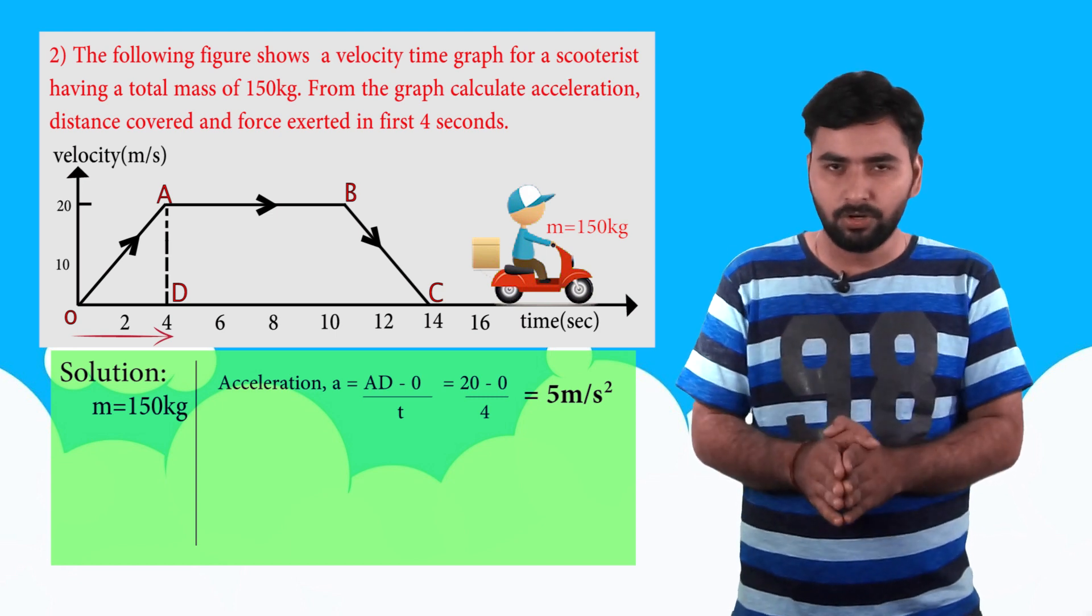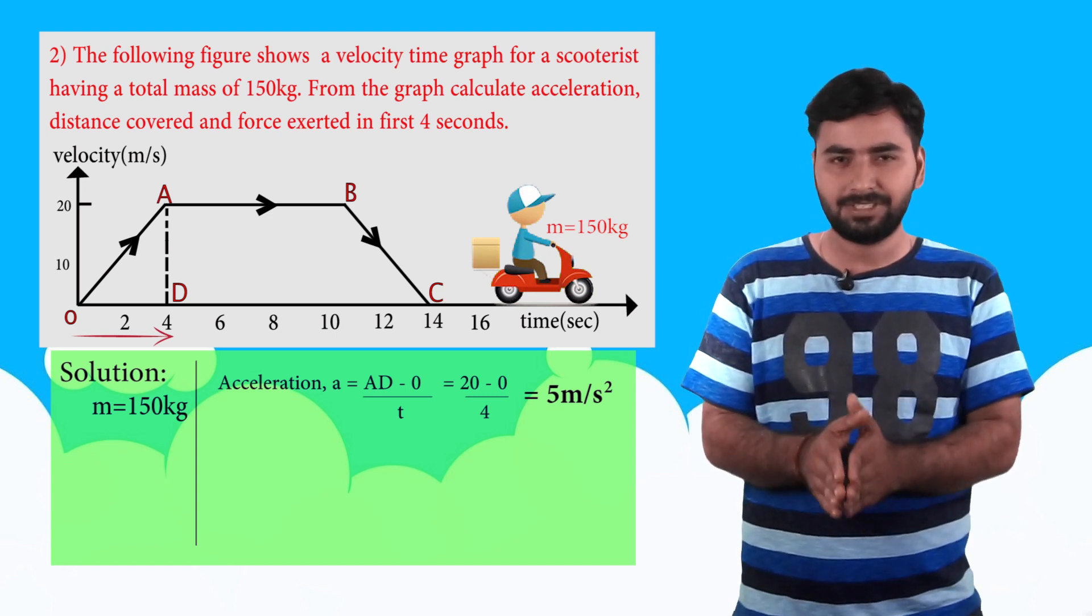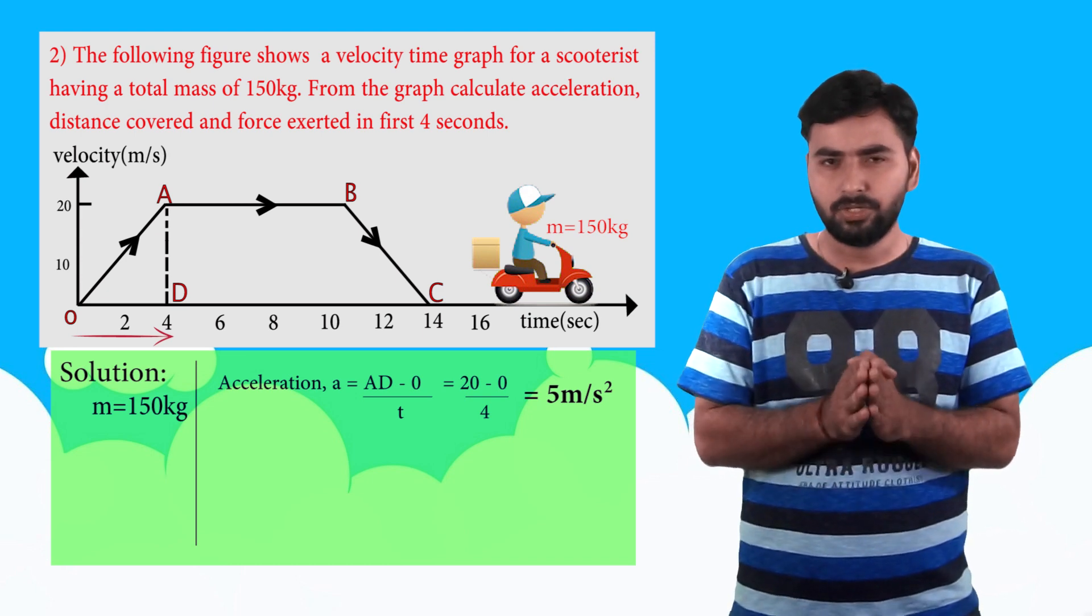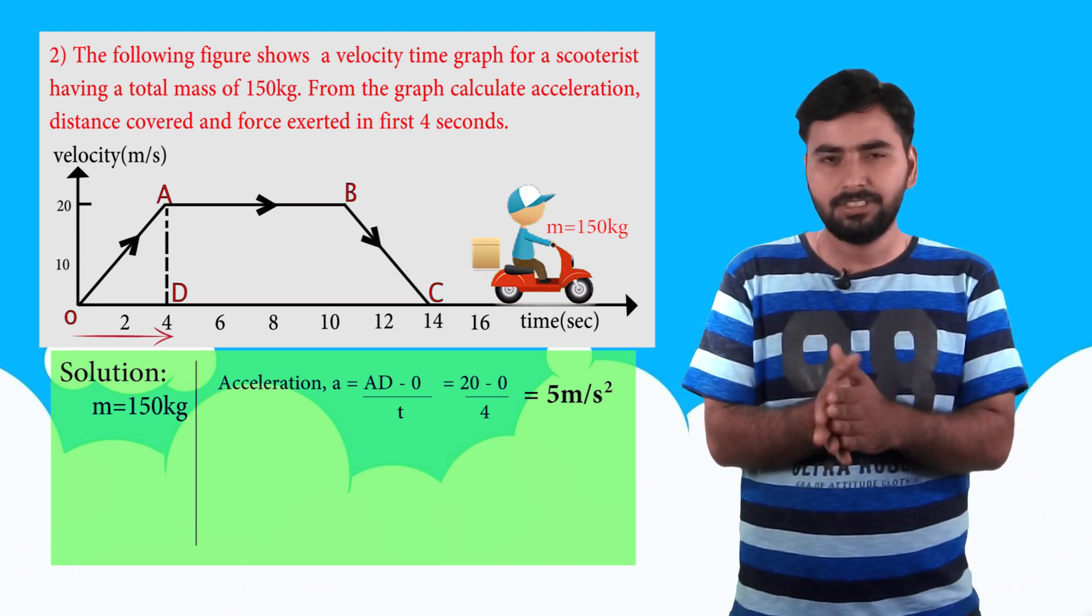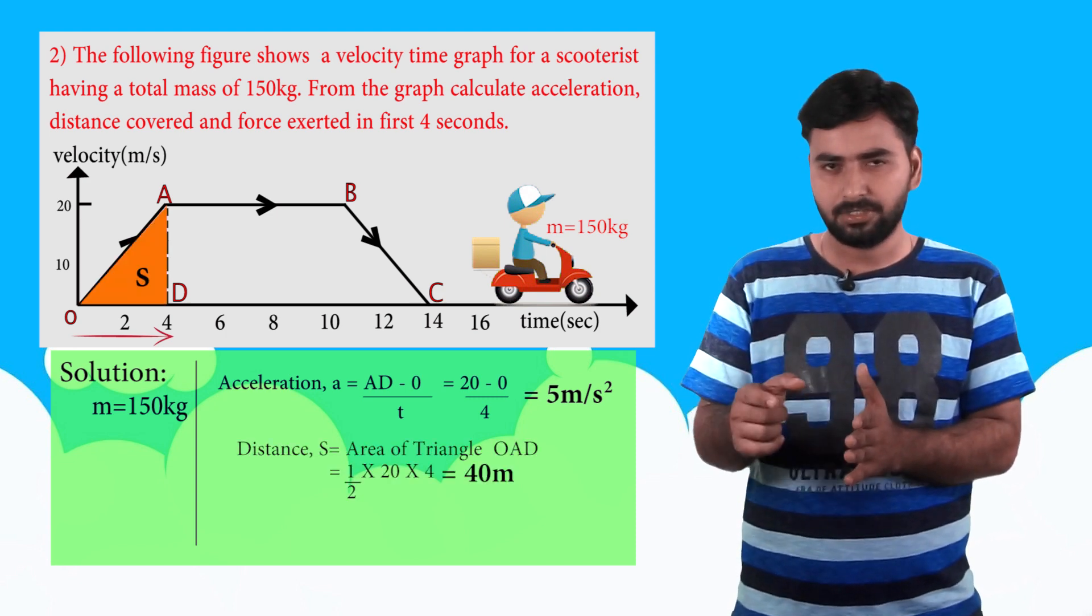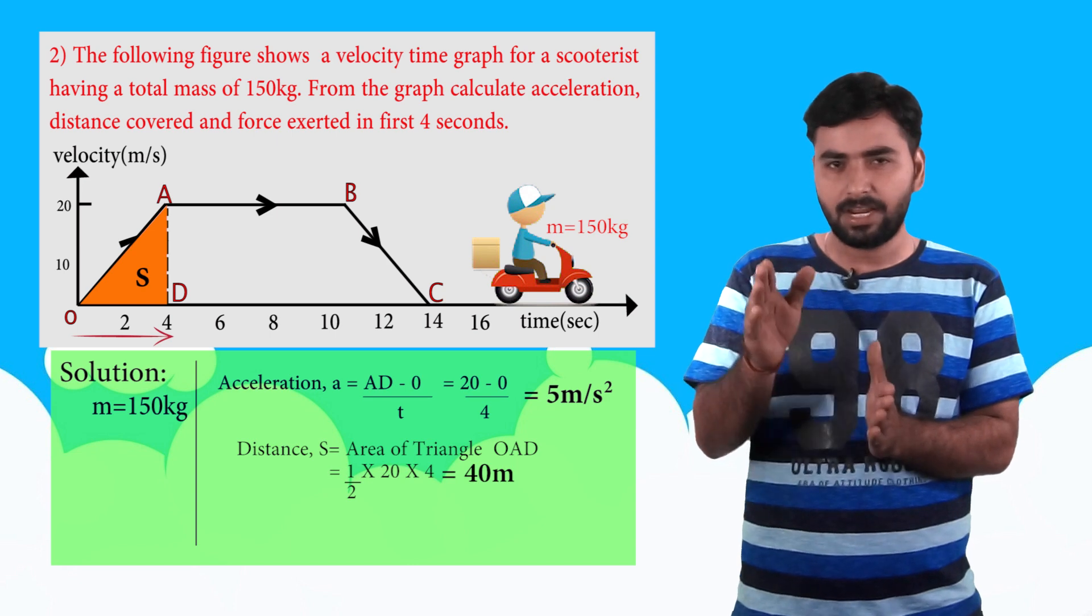The acceleration comes out to be 5 meter per second square. Now we need to find distance. So remember, if speed time or velocity time graph is given, how do we find distance? It is the area under the plot. So here from 0 to 4 seconds, the area between the line is a triangle.